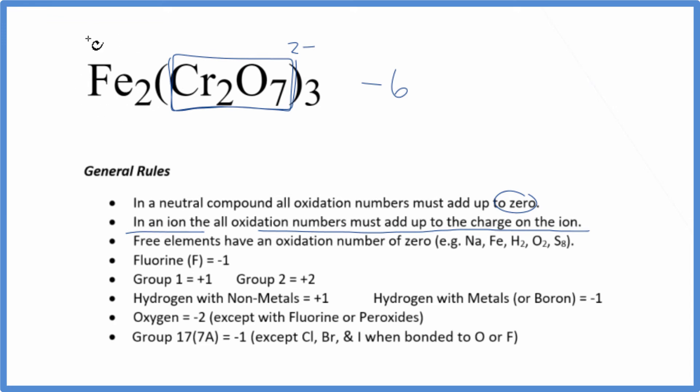So the iron has to be, somehow we have to have plus six here. Two times plus three, that gives us plus six. So that works out. We know that each iron is going to have a plus three oxidation number.